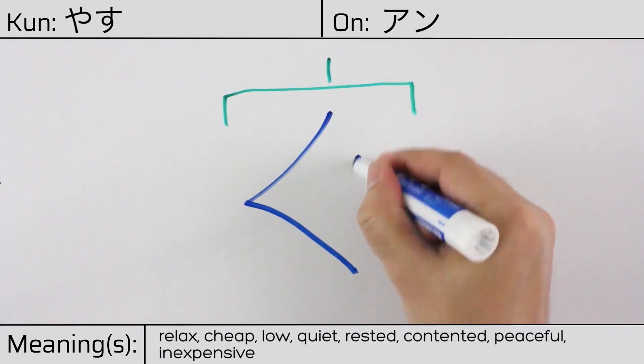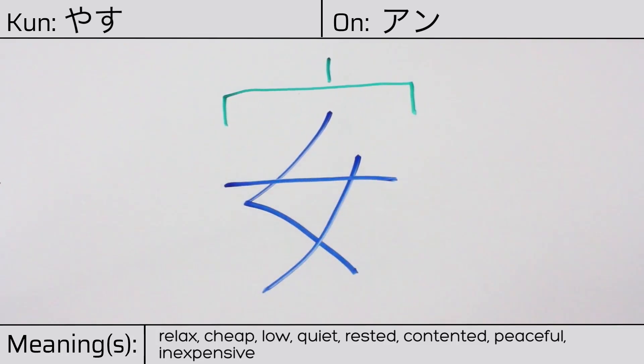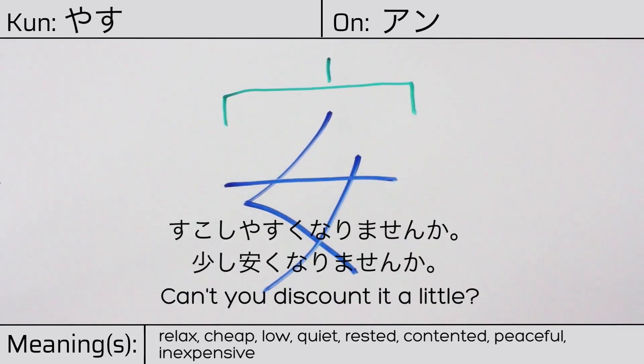Our example sentence is 少し安くなりませんか? Can you discount it a little?